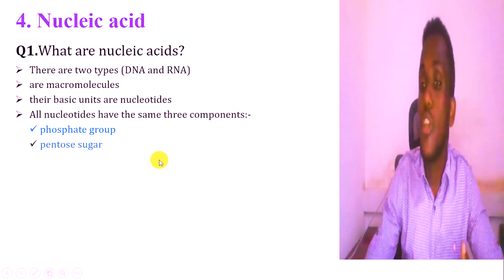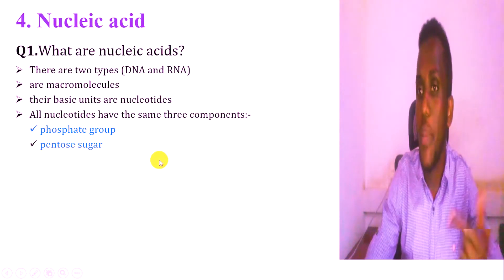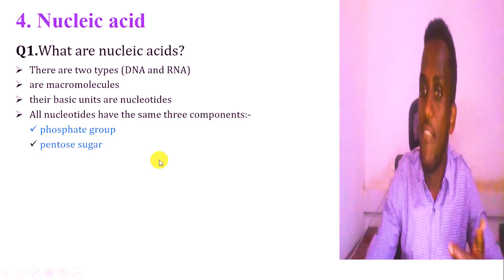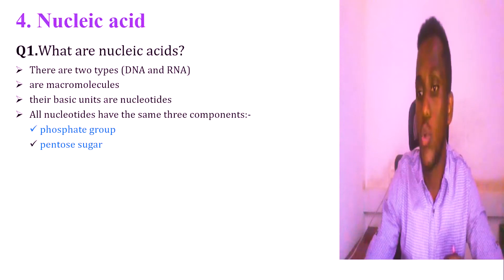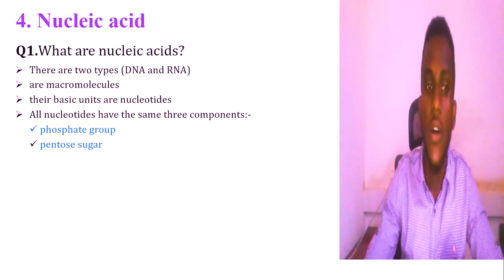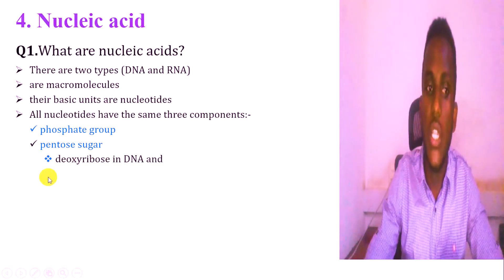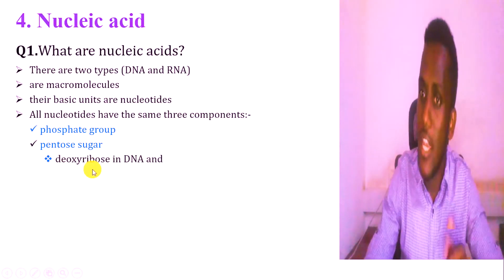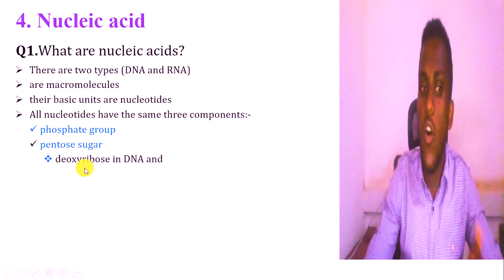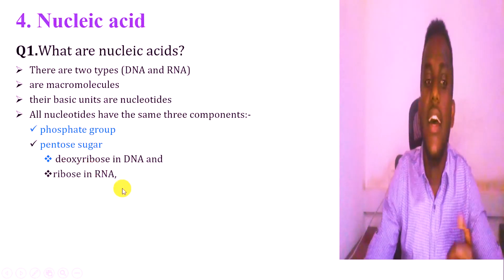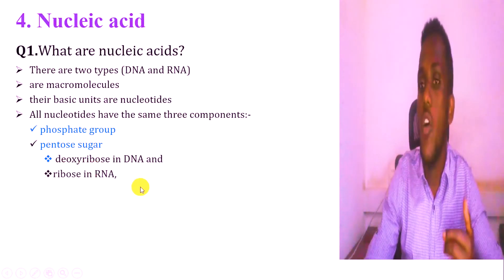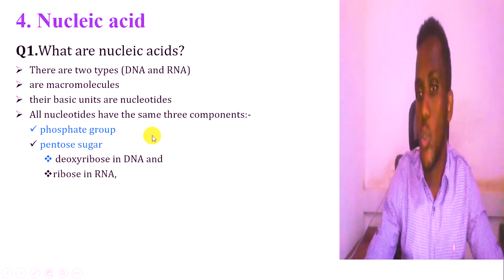This is the pentose sugar — a five-carbon unit. This is the deoxyribose, which is found in DNA. And the ribose sugar is found in RNA.